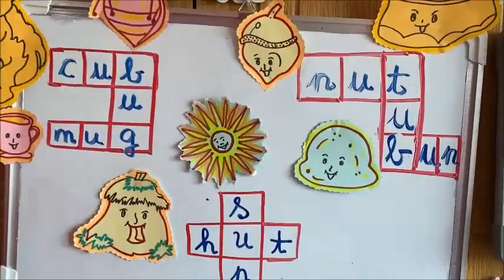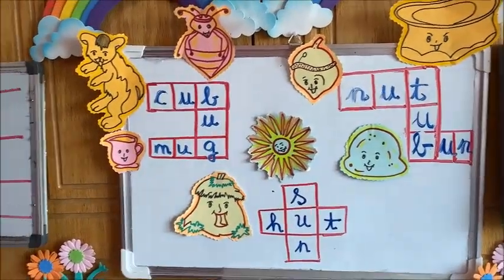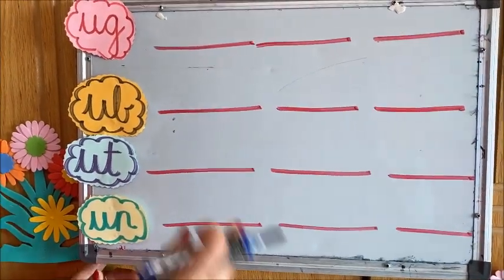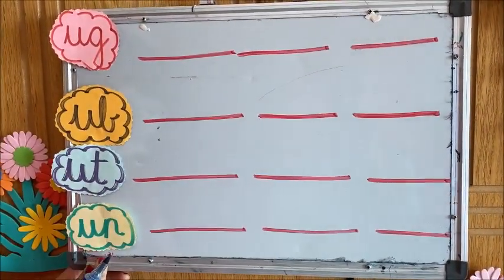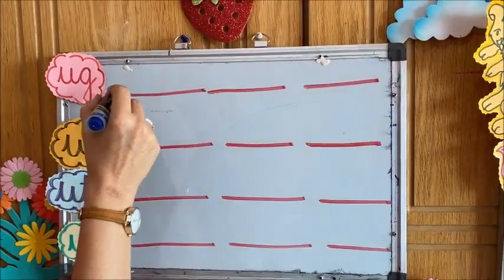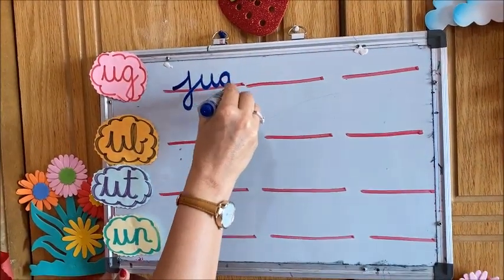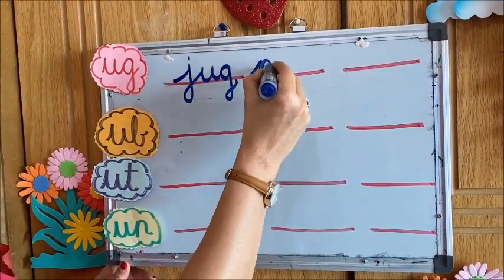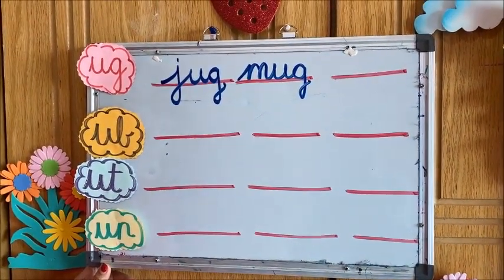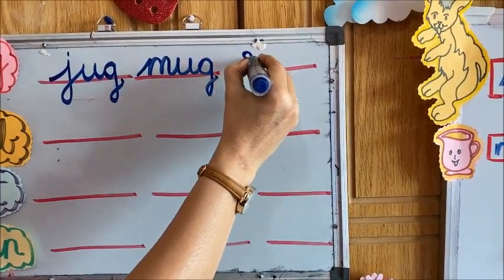So these are different types of puzzles. I am not going to do the simple one which you have already learned. Now we are going to write the words with these families. So Ug family — try to remember: yes, it is Jug, then Mug, then you can write Rug, or Dug, or Hug — anything. I am going to write Rug.